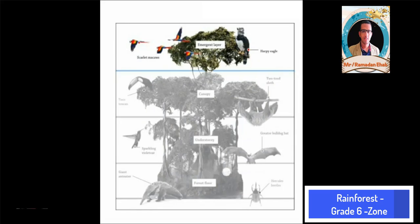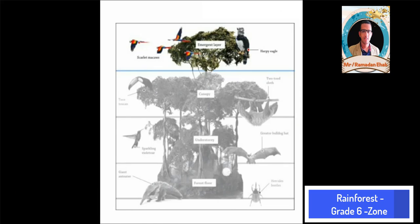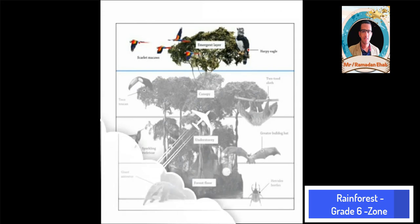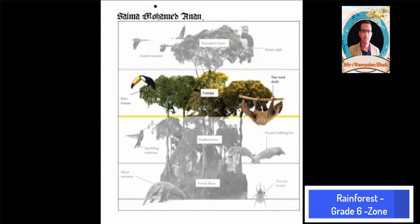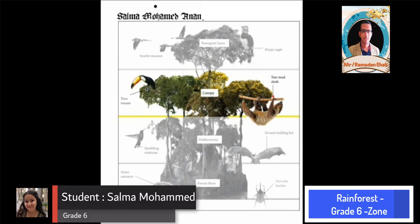First, I will talk about the emergent layer. The emergent layer is the highest part with the tallest trees. There is sunlight and wind, and birds live in this strata.